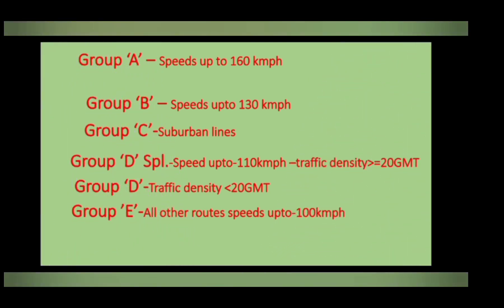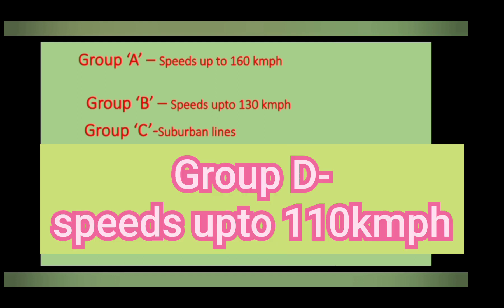Group A routes have maximum permissible speeds up to 160 kmph, and Group B routes have maximum permissible speed up to 130 kmph. Group C routes are all suburban lines in Mumbai, Delhi, Kolkata, and Chennai. Group D and Group E routes are now combined as Group D, with maximum speeds up to 110 kmph.